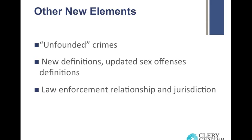Before we wrap up, a few other new elements: sworn law enforcement has the ability to unfound a crime if through a full investigation they make a formal determination that a report was false or baseless. However, institutions are now required to disclose the total number of reports that were unfounded — both in the report to the Department of Education and within their annual security report. Additionally, definitions for sex offenses were updated to reflect the updated Uniform Crime Reporting definition of rape — no longer broken into forcible and non-forcible, but rather the four categories of rape, fondling, incest, and statutory rape. We also have an additional bias category added to the reporting of hate crimes, which is gender identity.